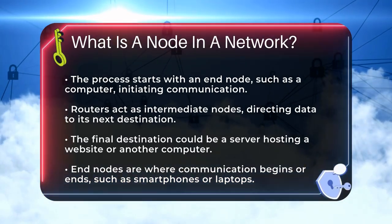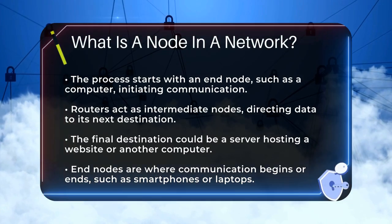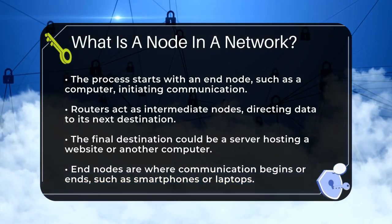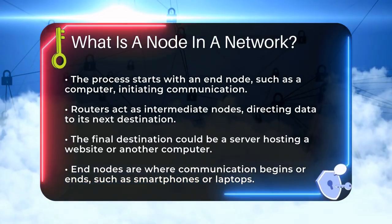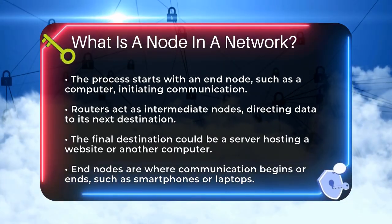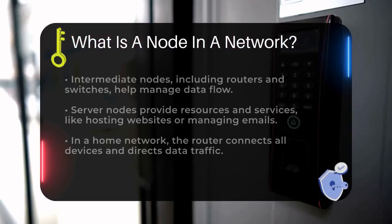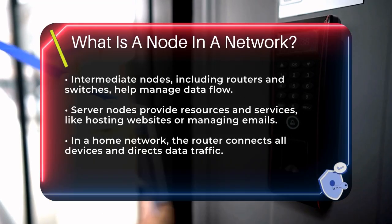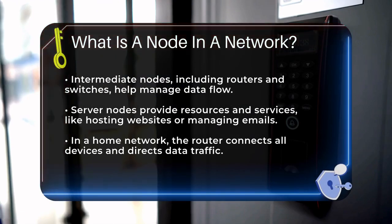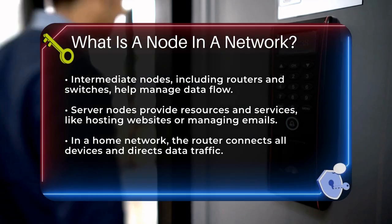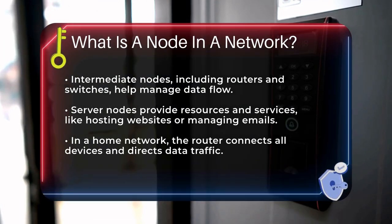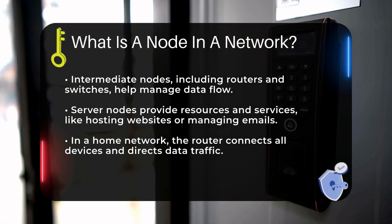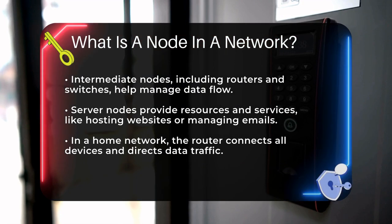There are different types of nodes, each with its own role. End nodes, like your computer or smartphone, are where the communication starts or ends. Intermediate nodes, such as routers and switches, help direct the data to the right place. Server nodes provide resources and services to other nodes, like hosting websites or managing emails.